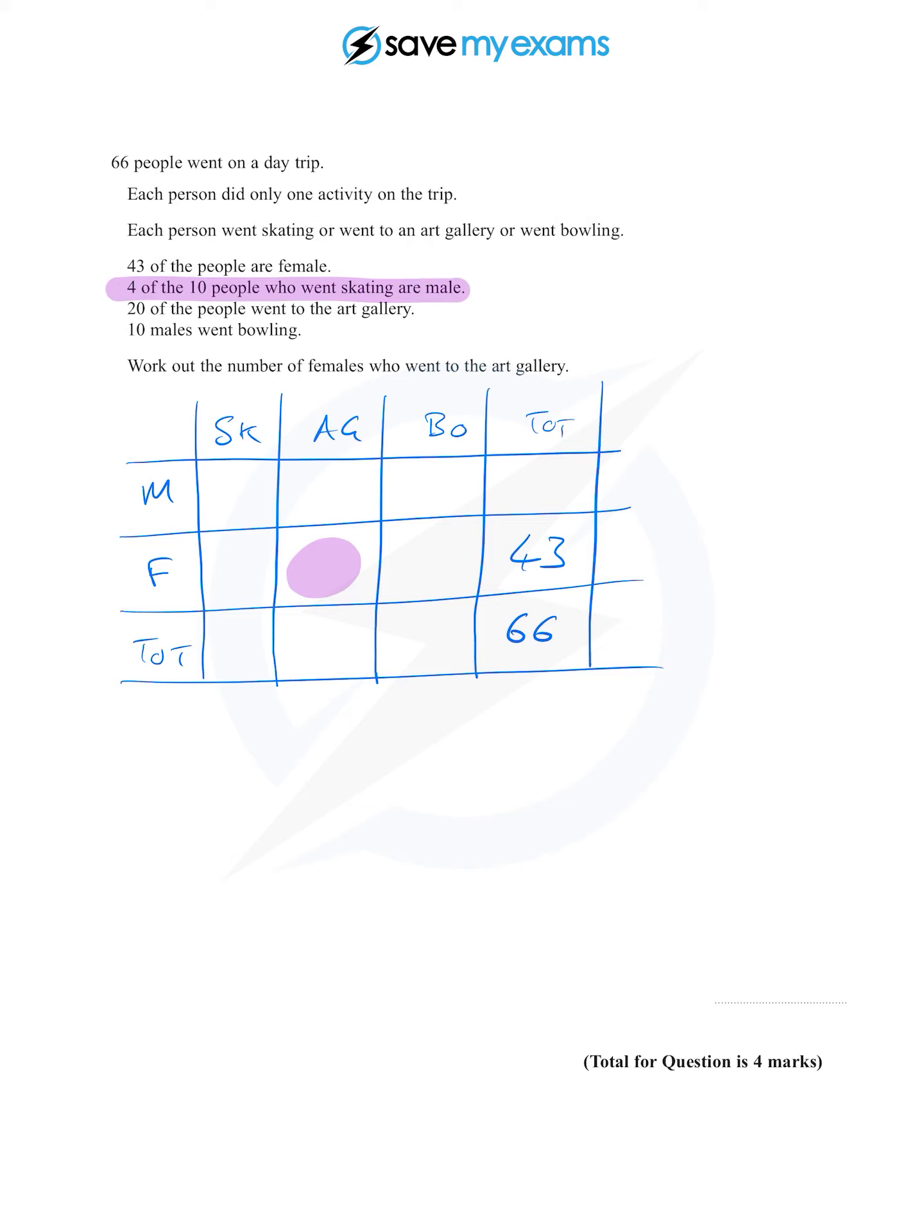So there are four male skaters and there are 10 skaters in total. The total of the skaters is 10 and the one in the male skaters is four.